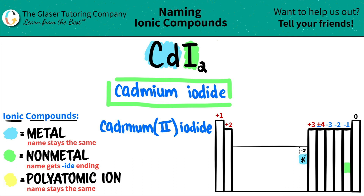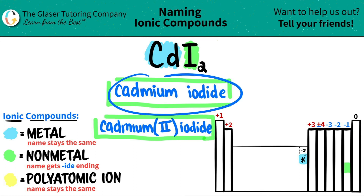Technically both are correct — it just depends on whether your professor or teacher wants you to use the Roman numeral. Just check with them on that. But I would go with the first one: CdI₂, since it only has one oxidation state, would be cadmium iodide.